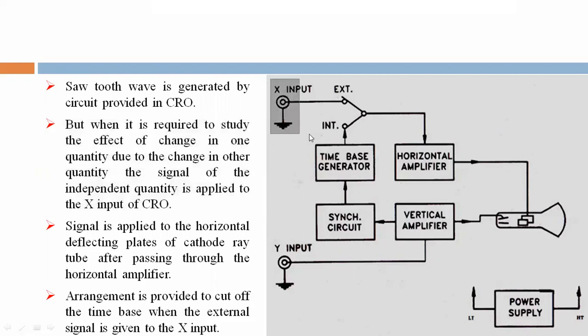The signal is applied to the horizontal deflecting plates of the cathode ray tube after passing through the horizontal amplifier. Here, this is horizontal amplifier.